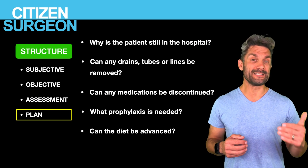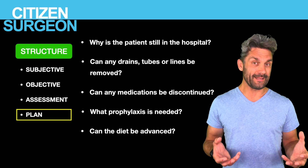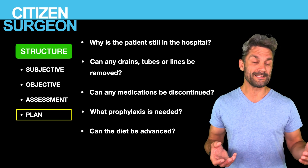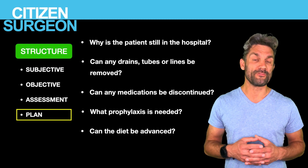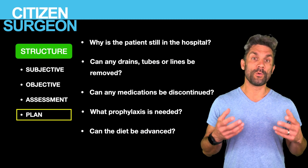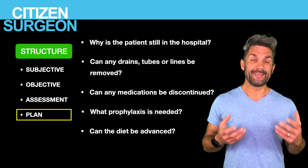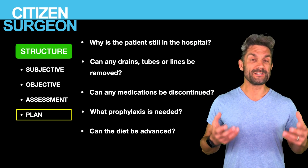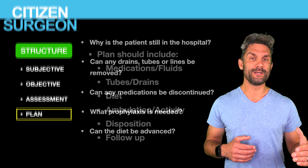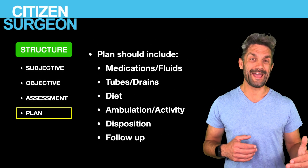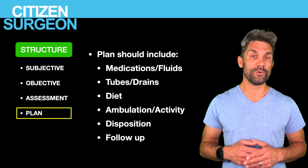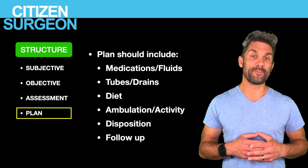You want to ask: can any medications be discontinued, or do any medications need to be started? Do we need to start unfractionated heparin or Lovenox for deep venous thrombosis prophylaxis? And if they're on opioids or antibiotics, can you discontinue those? You want to ask what prophylaxis is needed, can the diet be advanced, and going back to number one — can the patient be discharged? What's the dispo? The plan needs to include medications and fluids, any tubes or drains, what the diet is, what ambulation activity should be, what follow-up is, and what the dispo is — are they going home, staying, or transferring to another part of the hospital?